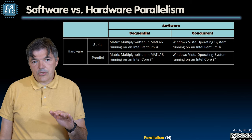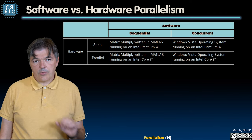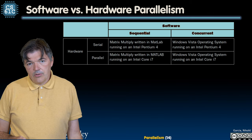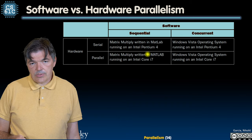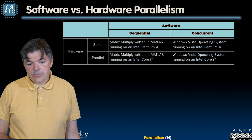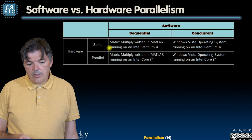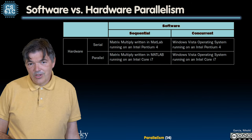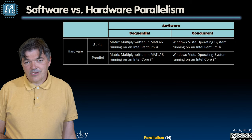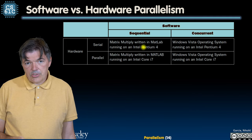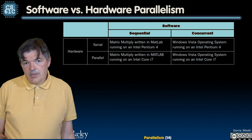There is an important thing to distinguish in parallelism between software and hardware — they are generally orthogonal to each other. This table compares an older processor that is strictly serial, the Intel Pentium 4, and a more modern processor, the Intel Core i7, which has parallel features. The same type of code can be run on a serial or a parallel processor. Software can be running sequentially, like our matrix multiplication, regardless of what type of hardware we are running on, or concurrently, like an operating system.